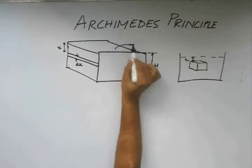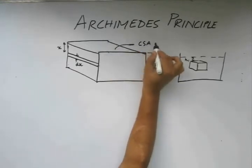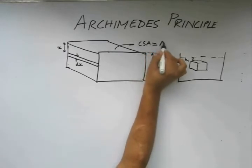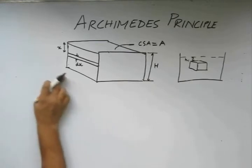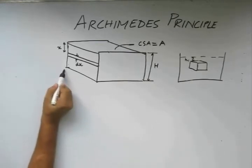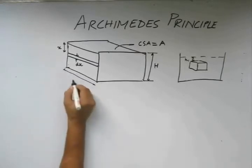Again assuming a constant cross sectional area denoted by CSA being equal to A. We will also require this width of the body in our calculations. So let us define that width by W.